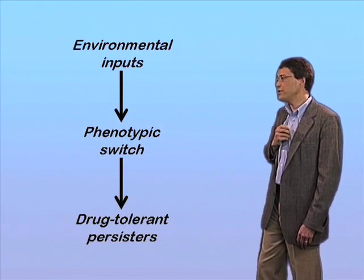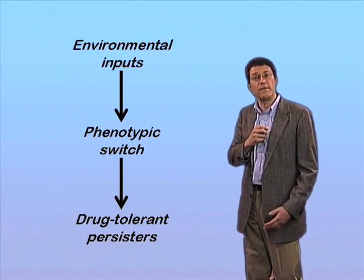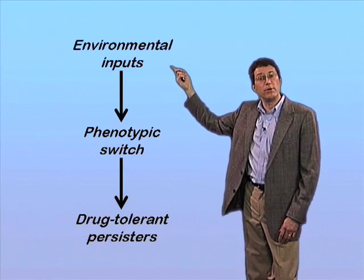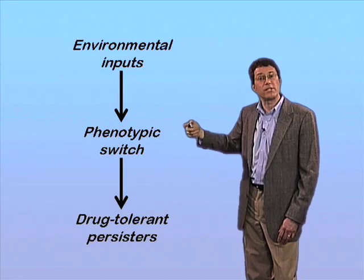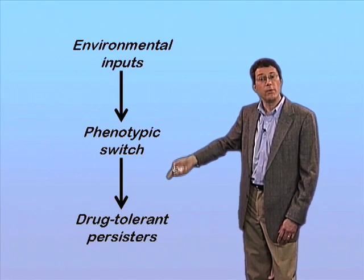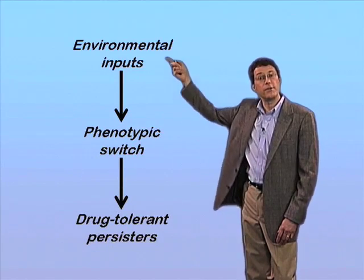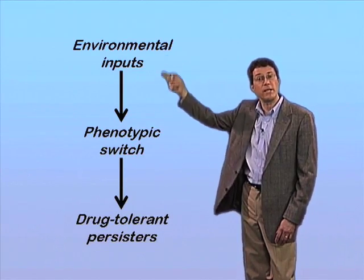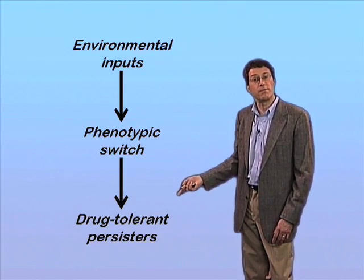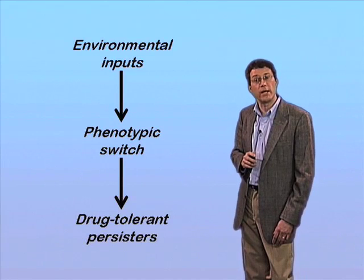According to the Mitchison hypothesis, then, the persistence of TB in the face of chemotherapy is due to a set of environmental inputs leading to a phenotypic switch — in this case a state of dormancy in a subset of organisms — which causes them to become these drug-tolerant persisters. There's a simple flow of information from the environment to the physiology of the bacteria, and this is what's responsible for the recalcitrance of these bacteria to killing with antibiotics.